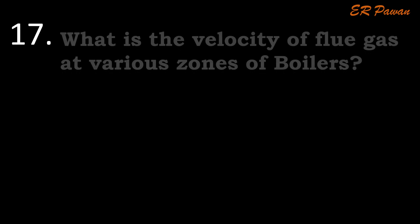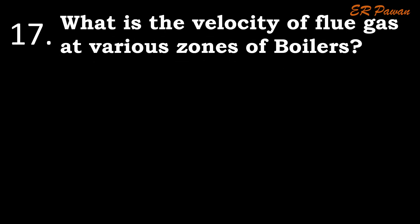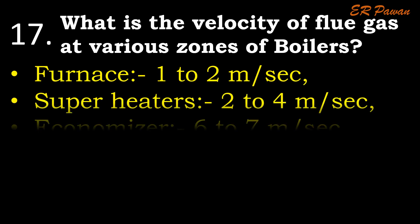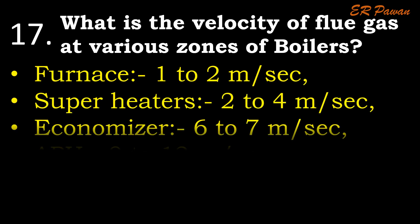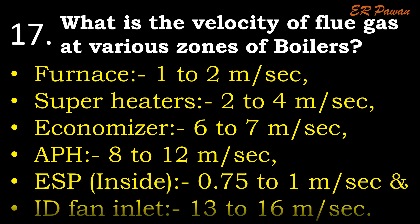Question 17: What is the velocity of flue gas at various zones of boilers? At furnace: 1 to 2 m/s. Super heaters: 2 to 4 m/s. Economizer: 6 to 7 m/s. APH: 8 to 12 m/s. ESP inside: 0.75 to 1 m/s. And at ID fan inlet: 13 to 16 m/s.